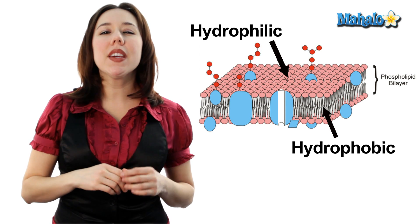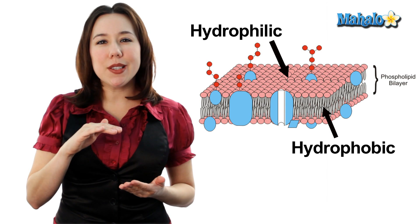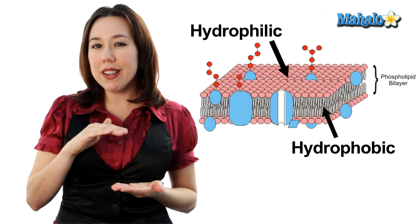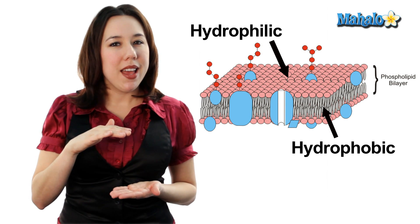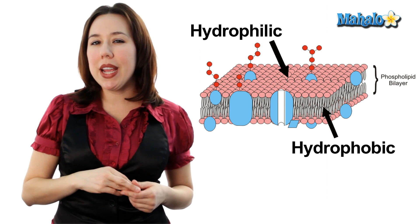Think of it kind of like an Oreo cookie where the brown chocolatey cookies are going to be hydrophilic or water loving, and that creamy center is going to be water hating. So let's think about it for a second — why would a cell want the edges that touch the outside as well as the inside of the cell to be water loving?